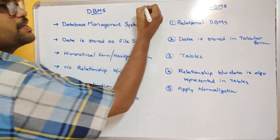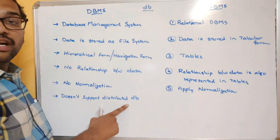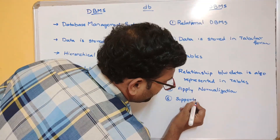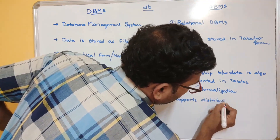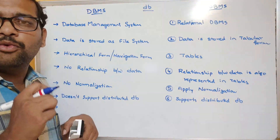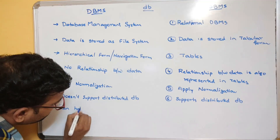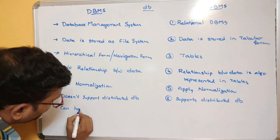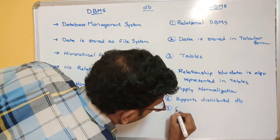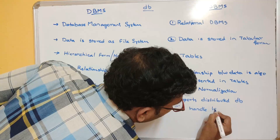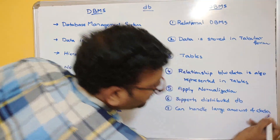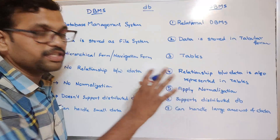RDBMS supports distributed databases, whereas DBMS can handle only a small amount of data. RDBMS can handle large amounts of data, and complex data can also be handled in RDBMS with the help of normalization techniques.